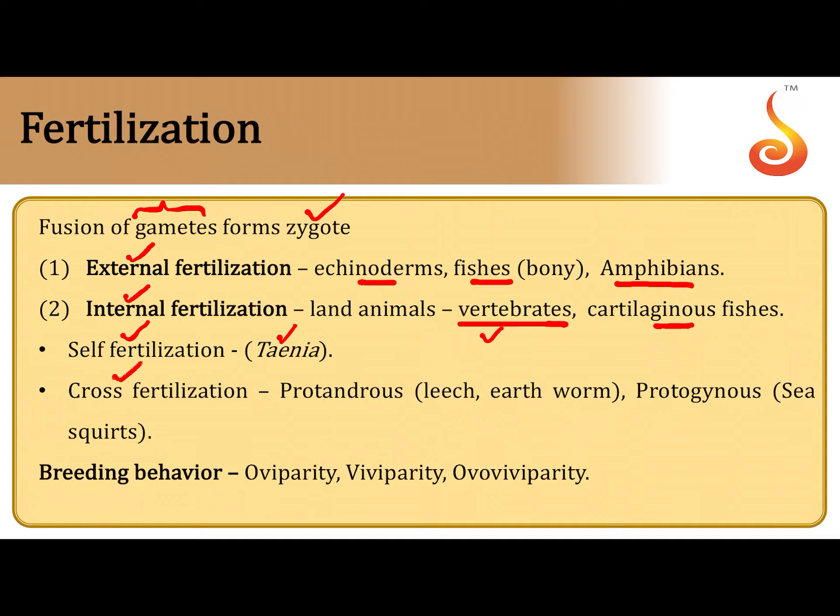It is important to know that even hermaphroditic organisms can resort to cross fertilization. Even though they are capable of producing both the sperm and the egg, they always ensure cross fertilization takes place, because when gametes are obtained from two different sources there is a chance to create variations in the offspring. These variations help the offspring better adapt to the surrounding environment.